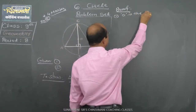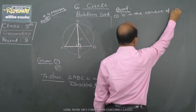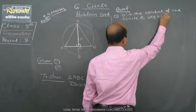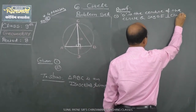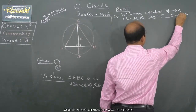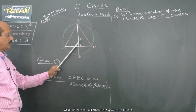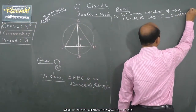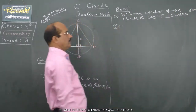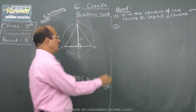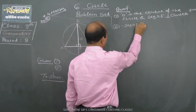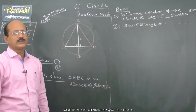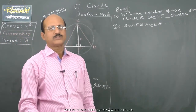O is the center of the circle and segment OE is perpendicular to chord AB, because CD is perpendicular to AB as given. Therefore, by the theorem — a perpendicular drawn from the center of the circle on its chord bisects the chord — segment AE is congruent with segment BE.